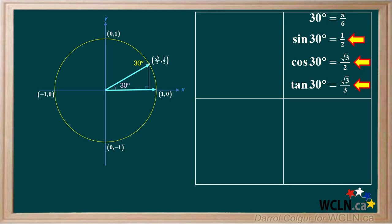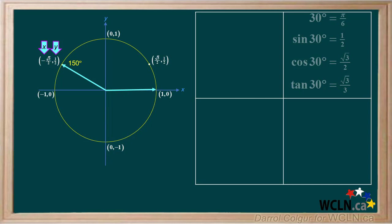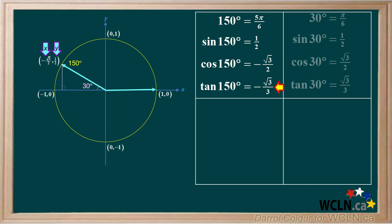Notice that for this 30 degree angle, the values of sine, cosine, and tangent are all positive. This is true for all angles in quadrant 1. Now we'll add a mark in quadrant 2, which corresponds to a principal angle of 150 degrees. We'll draw an arrow to show the terminal arm. The coordinates are negative root 3 over 2 for X and positive 1 half for Y. 150 degrees is equal to 5 pi over 6 radians. We'll add a right triangle, and we can see that the reference angle for 150 degrees is 30 degrees. The sine is Y over R, which is positive 1 half. The cosine is X over R, which is negative root 3 over 2. The tangent is Y over X, which works out to negative root 3 over 3. Notice only the sine is positive and the cosine and tangent are both negative. This is true for all angles in quadrant 2.